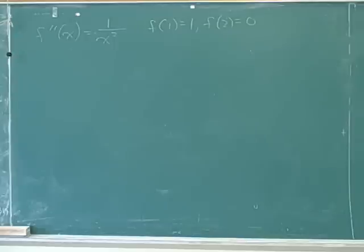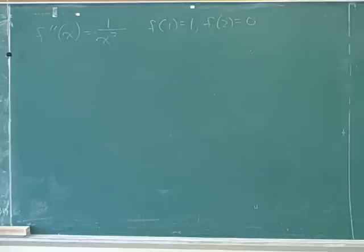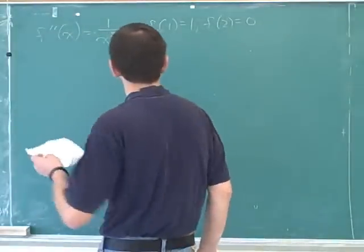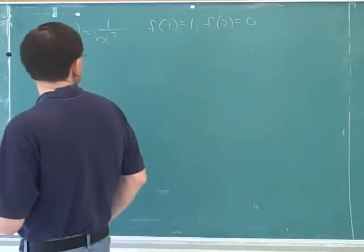I started here. So you took the anti-derivative plus c, and then took the derivative — which is another method. Looks like your general method is right, so let's just make sure that the details are right.